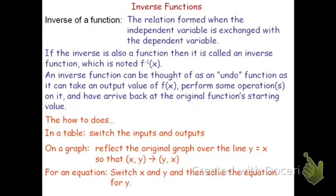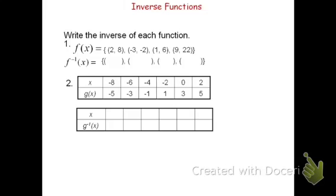Let's look at some examples. The first two are for both a set of points and then a table. To find these inverses, we're simply going to switch the x and y's. We're going to switch your independent and dependent variables.